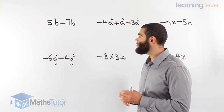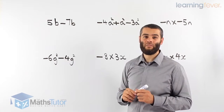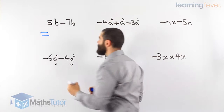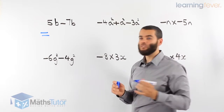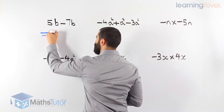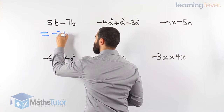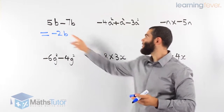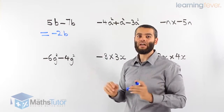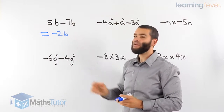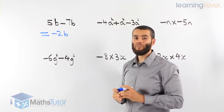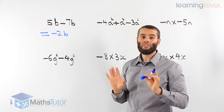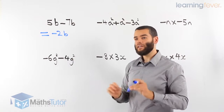Here we have 5b take away 7b. We know that 5 take away 7 is going to give us negative 2b. 5b take away 7b — they are like terms. We have a b here and a b there, which means we can take them away. 5 take away 7 gives negative 2b. Very simple — nothing different except that we are now using negatives.